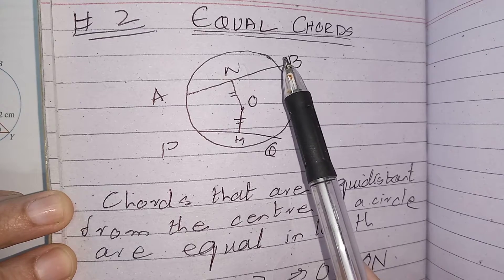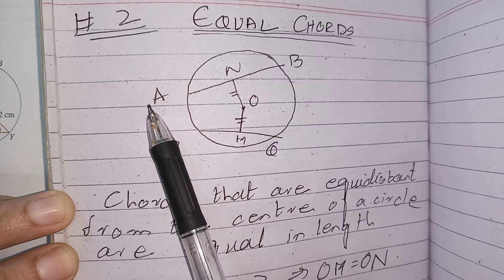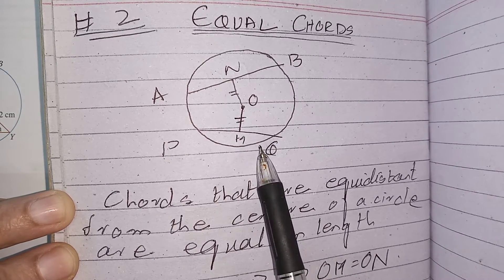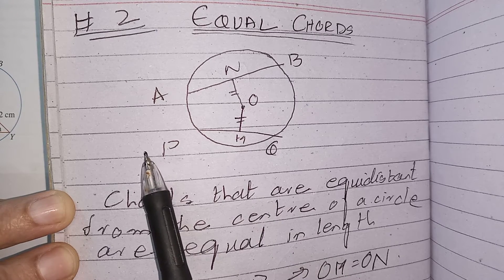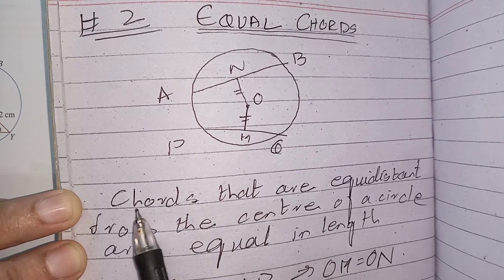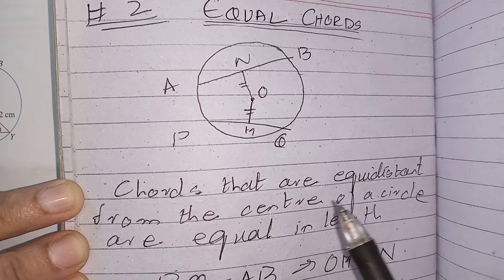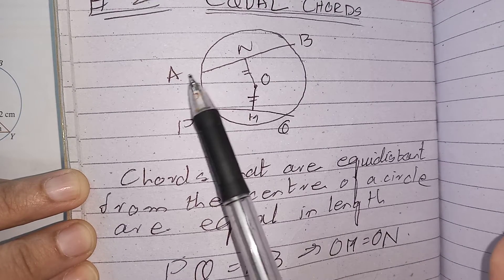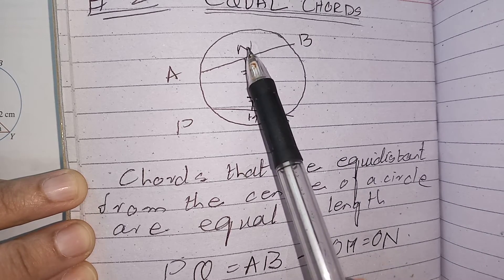Now let's discuss the second symmetrical property, which is equal chords. If AB and PQ are two chords that are equidistant from the centre, then the lengths of both chords will be equal. So, PQ equals AB if and only if OM equals ON.